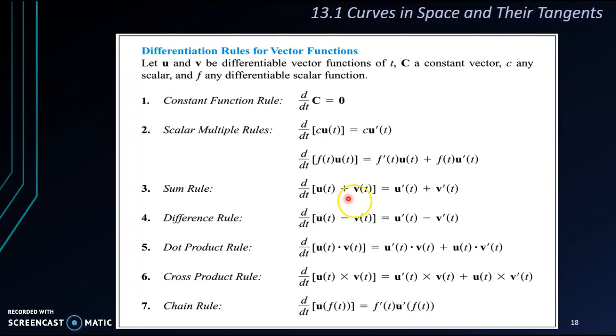If we have summation and subtraction between the two vector functions, what we need to do is just to differentiate one by one. So we'll get u'(t) plus v'(t) if we differentiate u plus v, and we'll get u'(t) minus v'(t) if we want to differentiate u minus v.